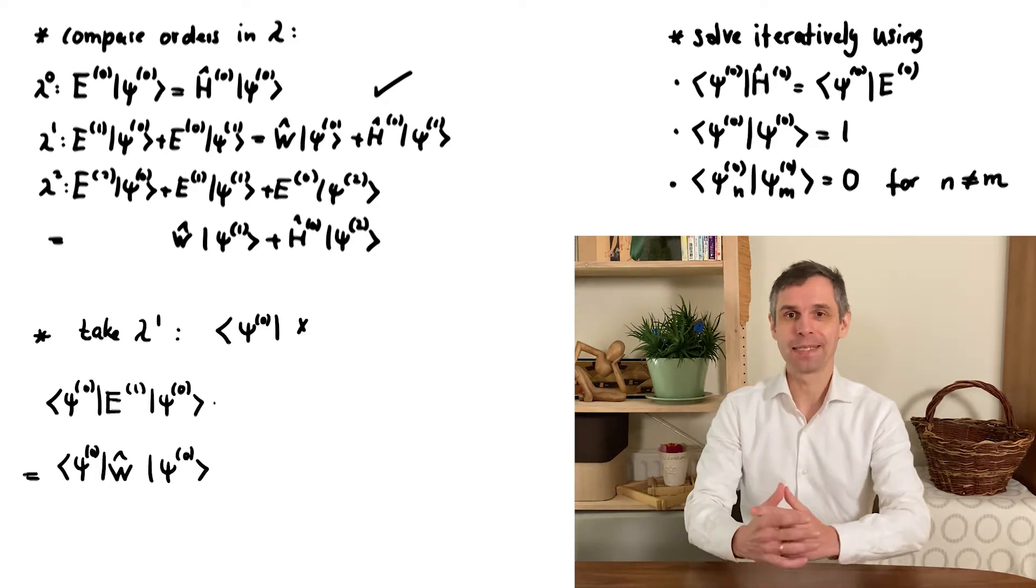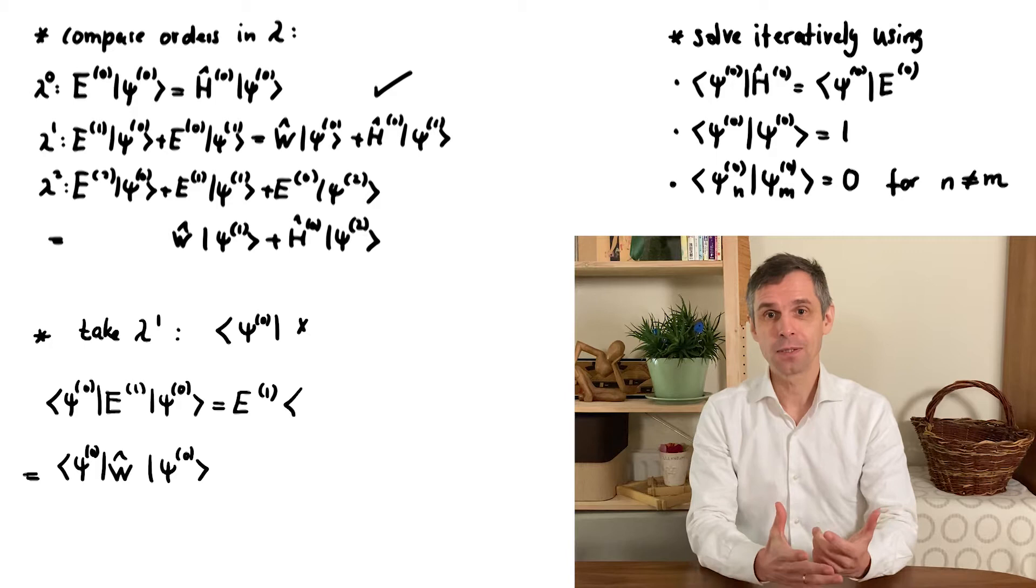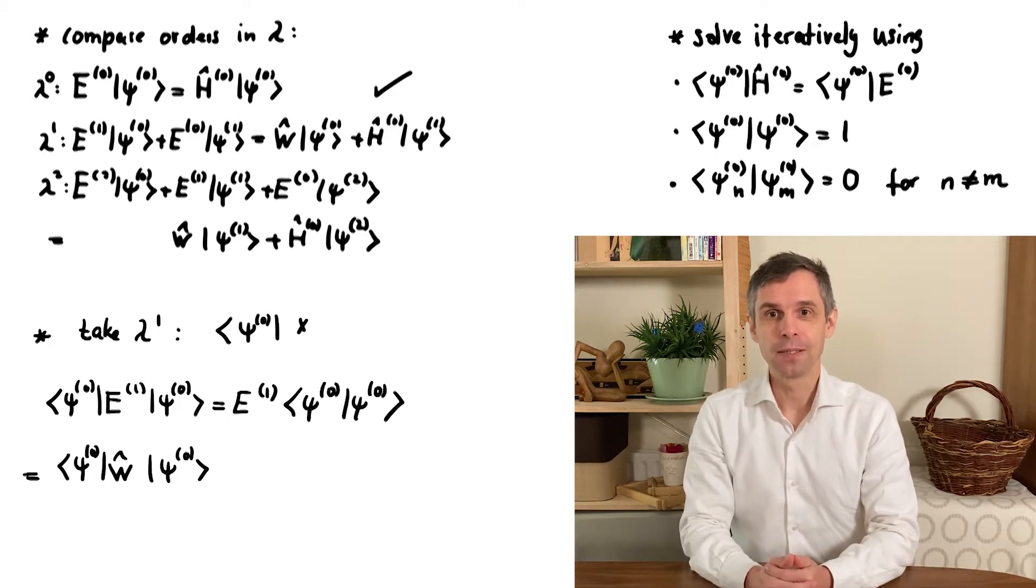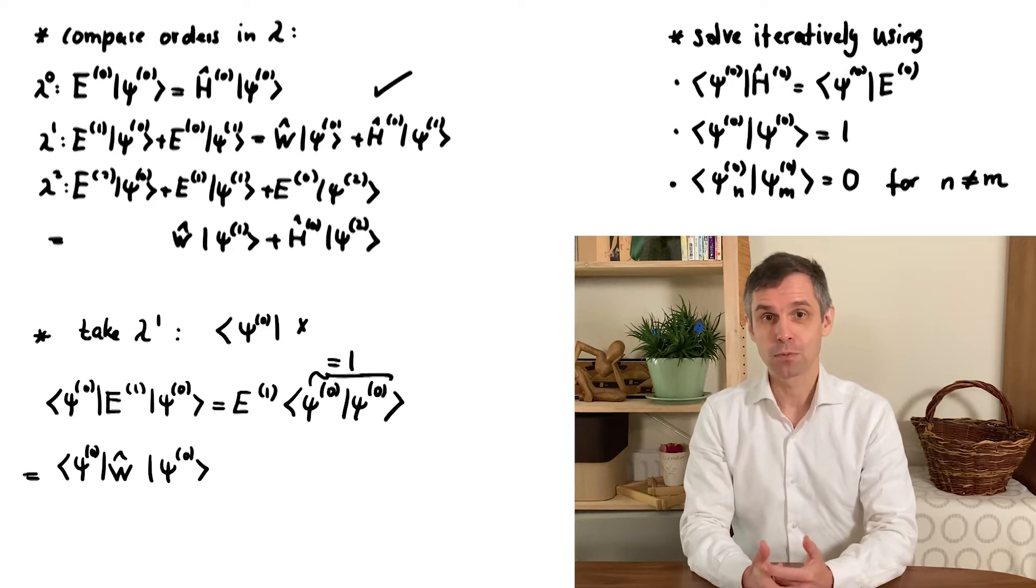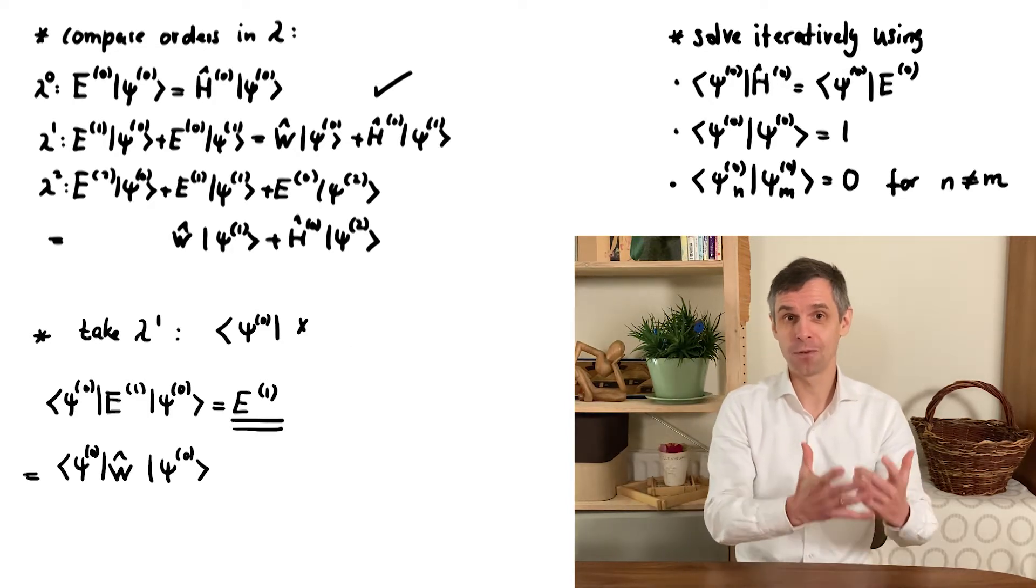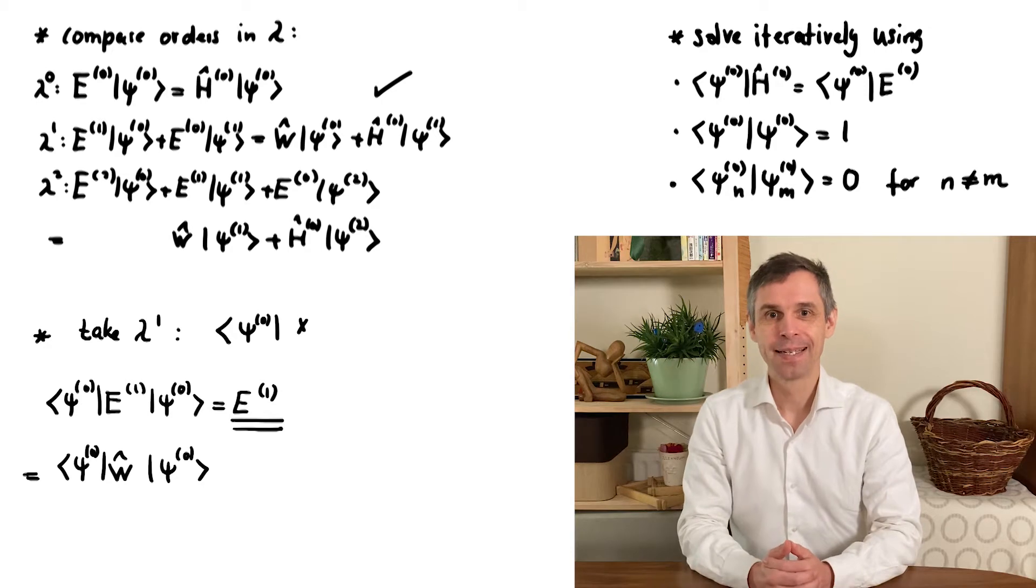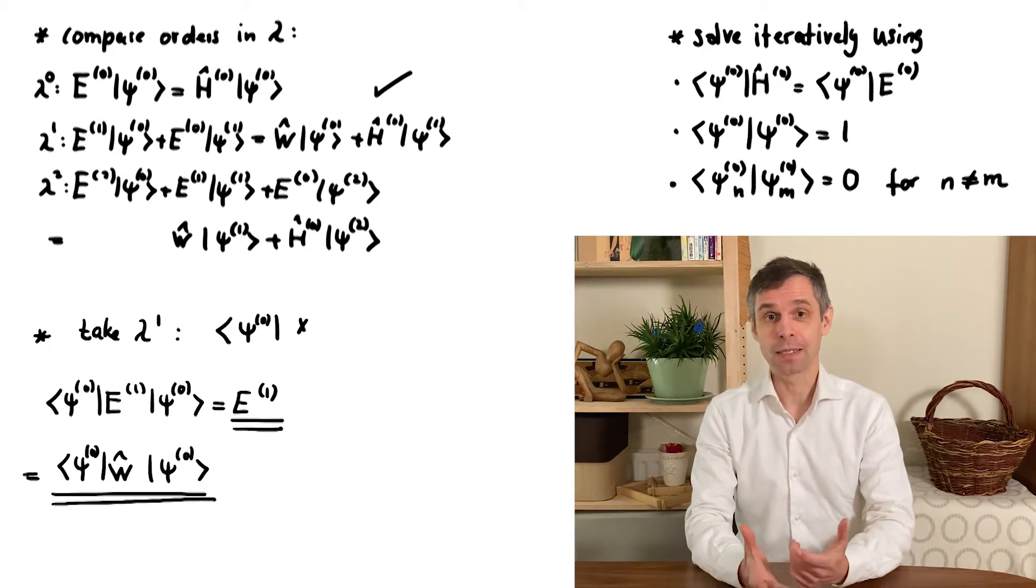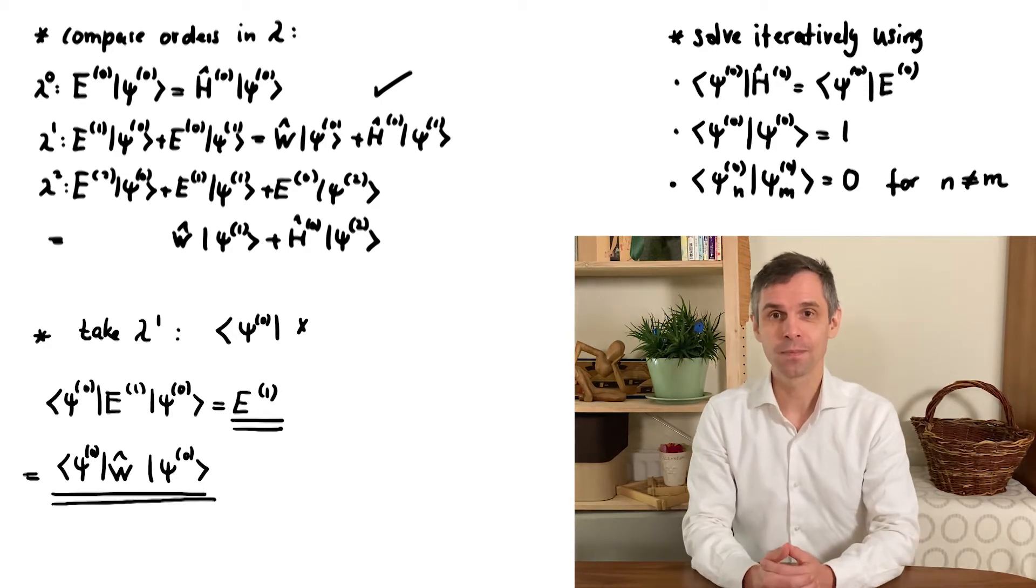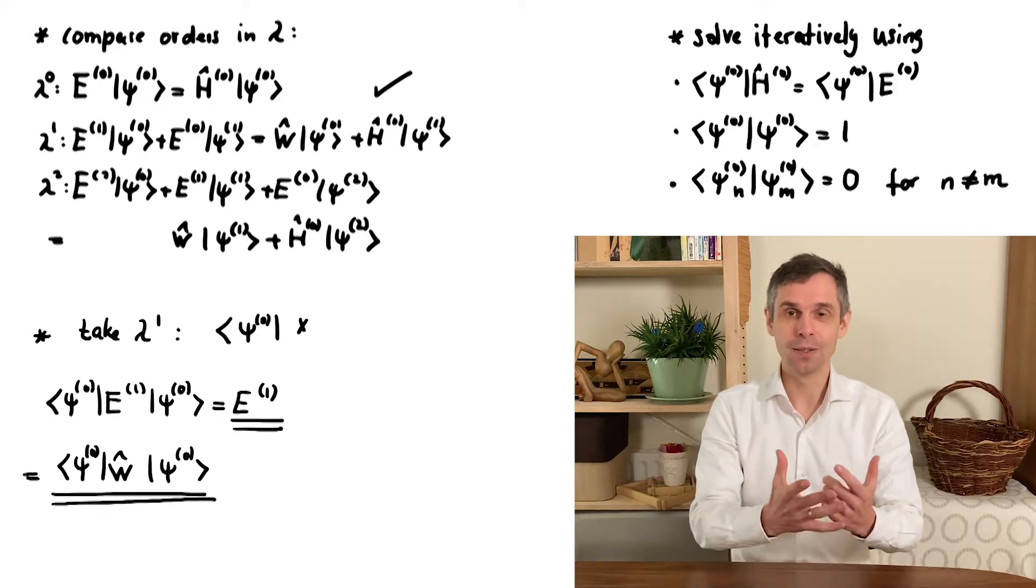So there are only two terms left. In the first one you can pull out the constant E1, and when you then use the normalization condition, you obtain an explicit expression for the coefficient appearing in the first-order correction of the energy. It turns out to be just an expectation value of the perturbation, namely evaluated in the known unperturbed state, which just gives us our main result of perturbation theory.